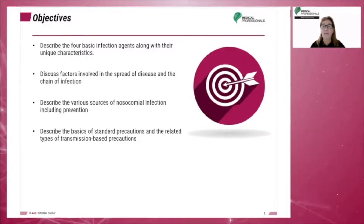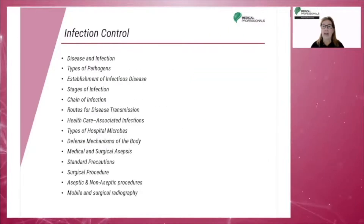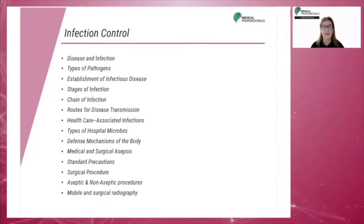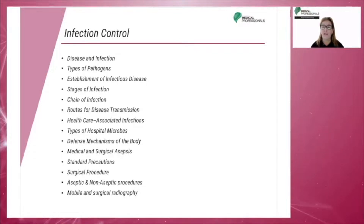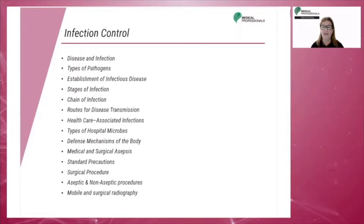And describe the basics of standard precaution and the related types of transmission-based precautions. We will be talking about disease and infection, types of pathogens, establishment of infectious disease, stages of infection, chain of infection, routes for disease transmission, healthcare-associated infections, types of hospital microbes, defense mechanisms of the body, medical and surgical asepsis, standard precautions, surgical procedure, aseptic and non-aseptic procedures, and lastly, mobile and surgical radiography.